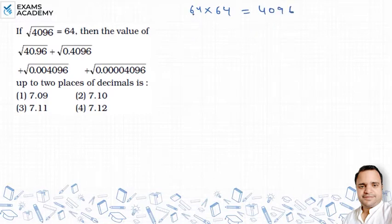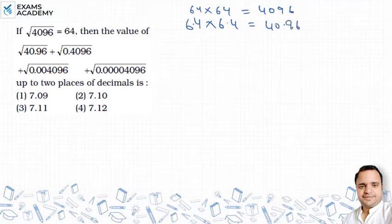Similarly, if we introduce one decimal place and multiply 6.4 × 6.4, the value we get is 40.96. This means when there is one decimal place in the factor, the resultant will have two decimal places. For example, in the first part, we have 40.96.